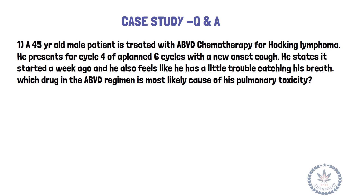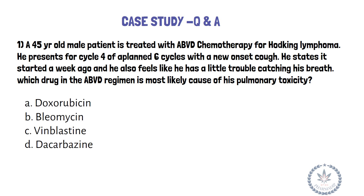Case Study 1. A 45-year-old male patient is treated with ABVD chemotherapy for Hodgkin's lymphoma. He presents for cycle 4 of a planned 6 cycles with a new-onset cough. He states it started a week ago and he also feels like he has a little trouble catching his breath. Which drug in the ABVD regimen is most likely the cause of his pulmonary toxicity? The options are: A. Doxorubicin, B. Bleomycin, C. Vinblastine, D. Dacarbazine.